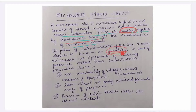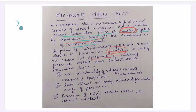In the case of microwave signals, we use S-parameters or scattering parameters rather than conventional parameters. Conventional parameters — which you know from network theory — are Y, Z, A, B, C, D parameters. These are conventional parameters for two-port networks.